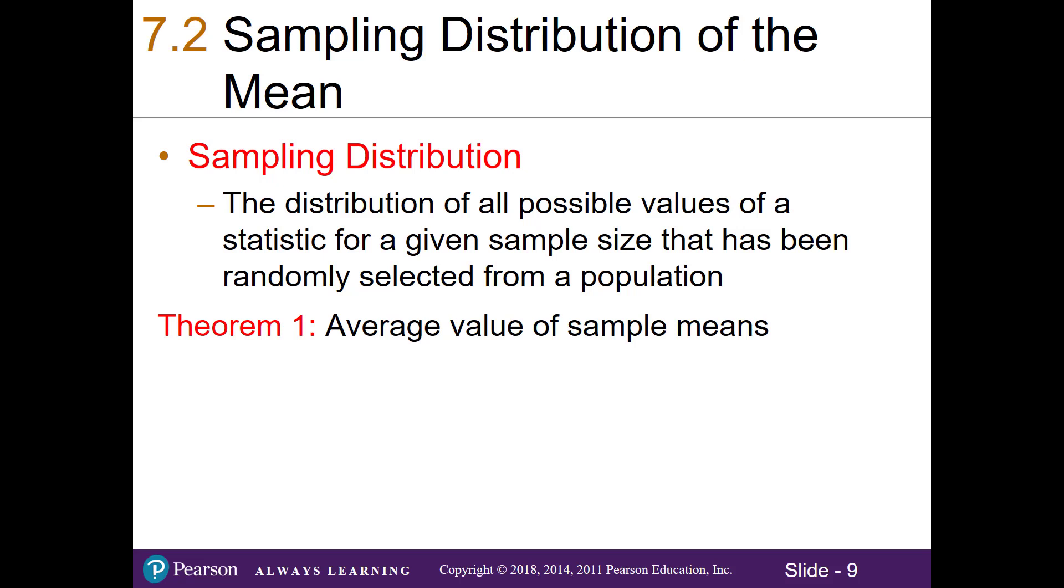The first theorem is regarding the average value of our sample means. For any population, if I took all of our possible sample means and I calculated the average value of them, it's going to be the same as our population mean. Because if I'm studying every possible sample in the population, it's the same as studying the entire population itself. So we can write that our μx̄ is the same as our population mean μ.